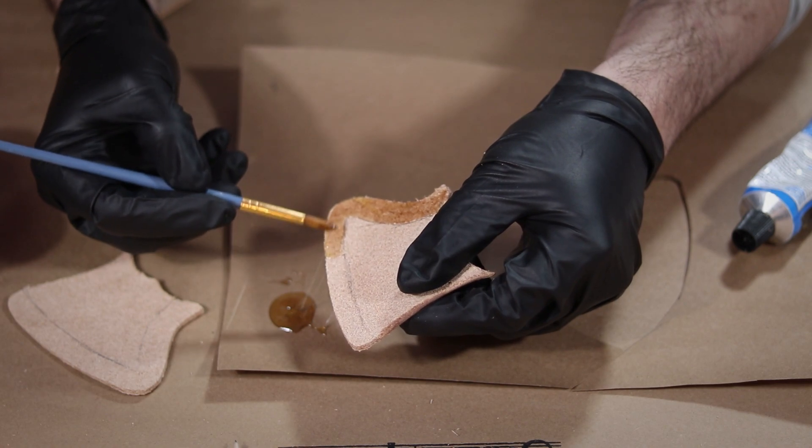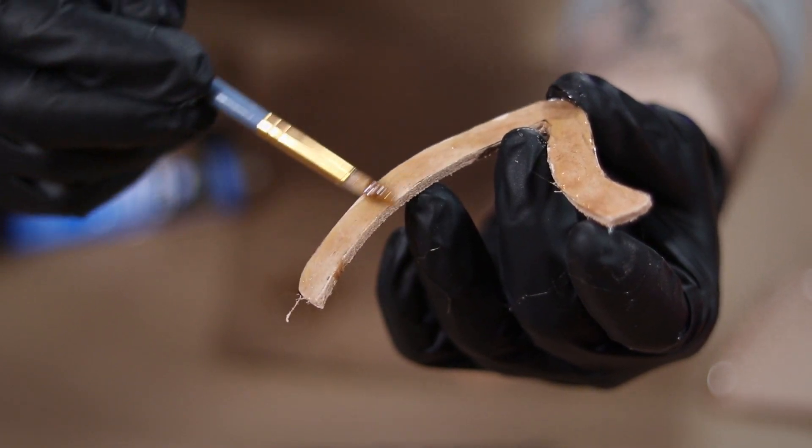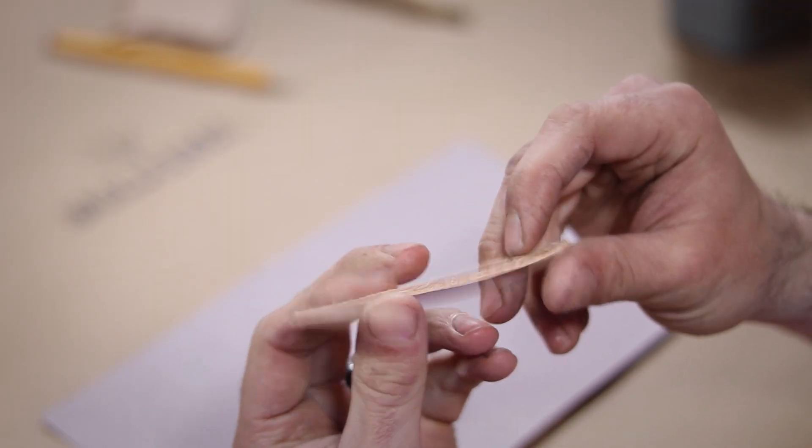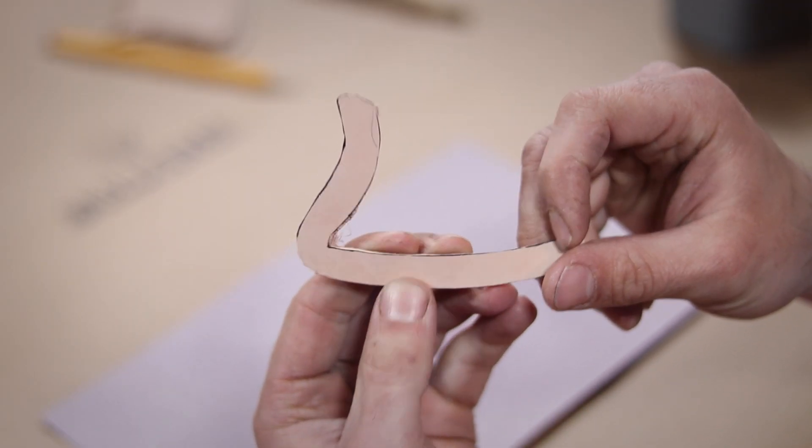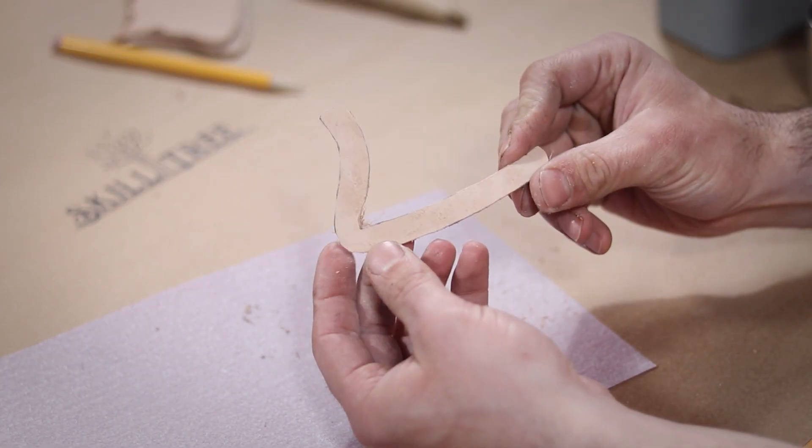Then I carefully apply some barge cement to the marked out areas as well as to both sides of my welt. Oh, quick note before you glue up that welt though, leather has a rough side and a smooth side. You want to go ahead and rough up that smooth side so that the glue has more to hold onto.